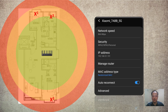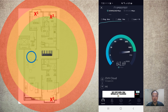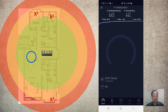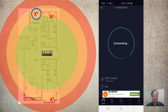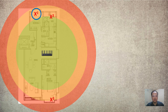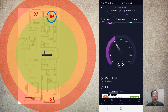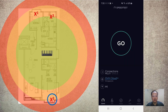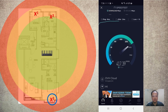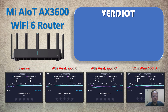The Samsung S10+ is on WiFi 5 compatibility mode with the AX3600. This is the baseline — what we get at the closest point to the router. Let's take a look at the performance at X1, then X2 — which is one of the worst spots because it's really blocked by many walls and is furthest from the router — and then the blind spot in the master bedroom.